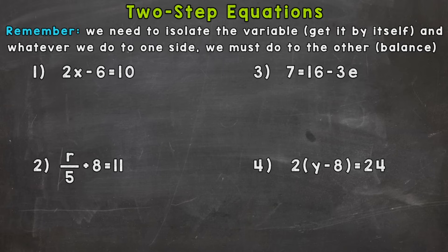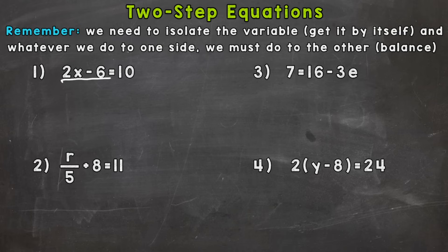For number one we have 2x minus 6 equals 10. We want to isolate x — get it by itself. I like to think of it as we need to reverse the order or undo this side of the equation to get that x by itself. We're going to use the reverse order of operations. We have 2 times x and then we subtract 6, so this subtraction of 6 needs to come first. We can add 6 to get rid of that 6 from the left side.